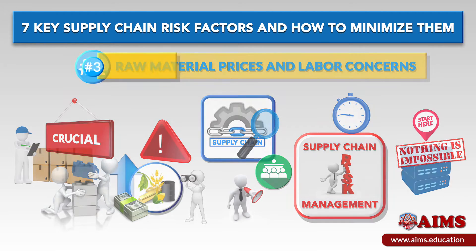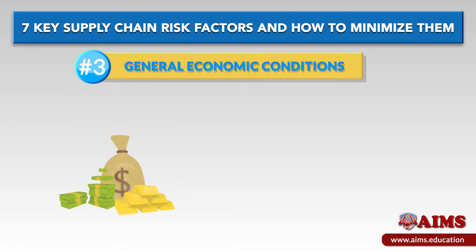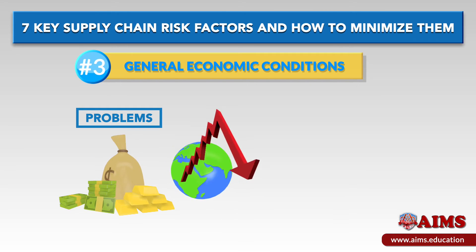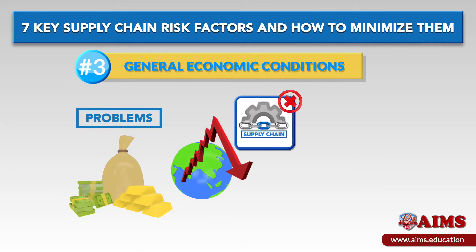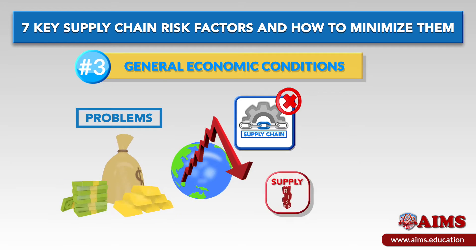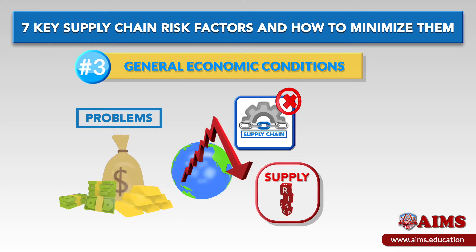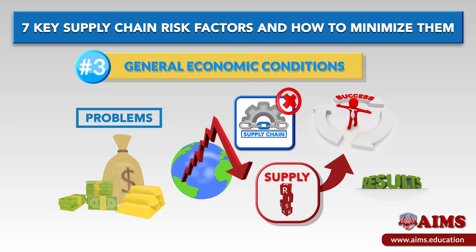Factor number three: general economic conditions. Economic problems that affect a country's stability will in turn affect supply chains. This is one of the supply risks you have to tackle early on if you want to reach the very best success and results.